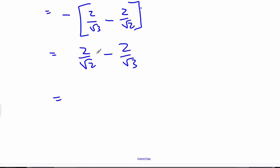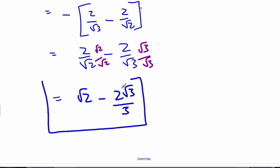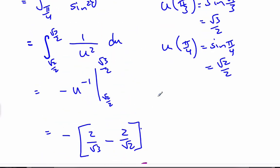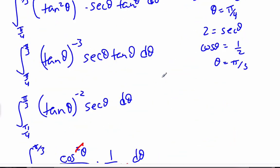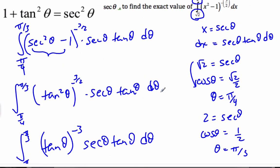Rationalizing this, I multiply this by root 2 over root 2, and this by root 3 over root 3. And when I do it, I get 2 root 2 over 2 minus 2 root 3 over 3. And that is my final antiderivative. And so to do it, I did two different substitutions. I started with the one they gave me. I had no choice but to use the secant theta, and then I eventually used a u substitution. Quite involved, lots of substitutions.